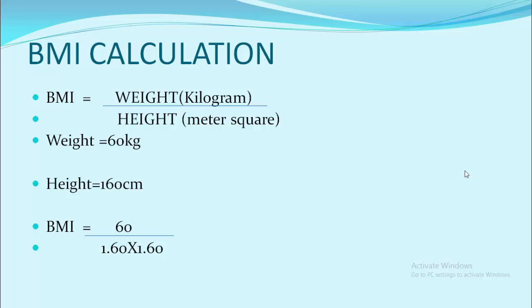I have given 160, then why I write as 1.6 and 1.6? Your guess is right. We have converted that centimeter into meter because the above is kilogram and the below should be meter. Now when we calculate, it gives the value of 23.43.